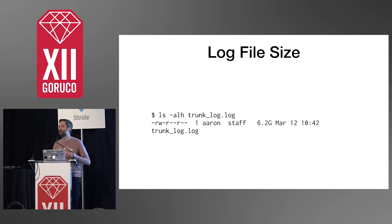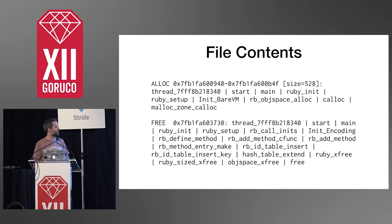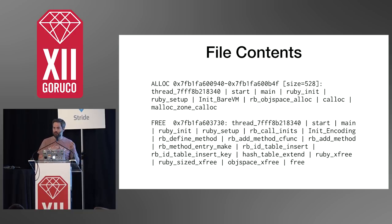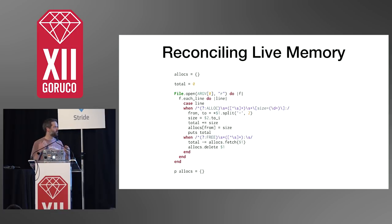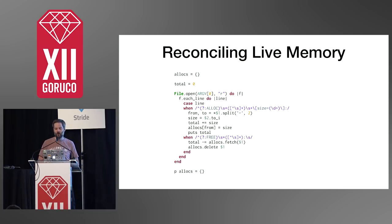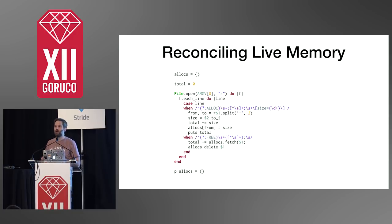If you look at the log file, it looks like this: we have an allocation, it says 'alloc' at the very beginning, we have a memory address so we know where it was allocated, we have a size, and then we have a stack. For a free, we have similar information. If we process these logs, we can reconcile live memory within the application at any point in time. We can know how much memory the program was using at any point, what is allocating the most memory, and how much memory is alive when we pause the program.